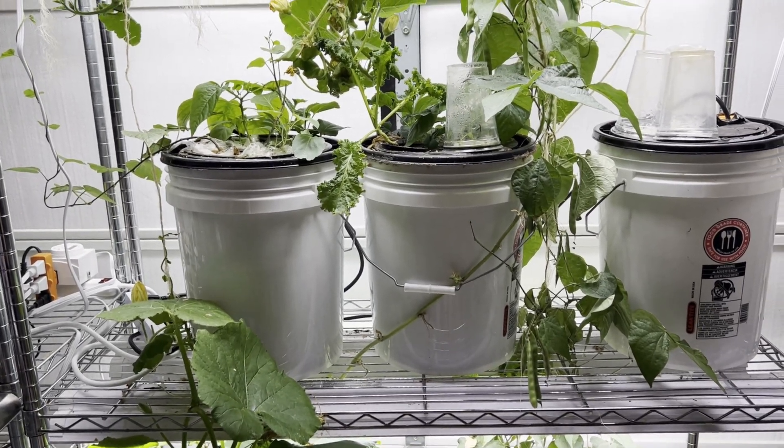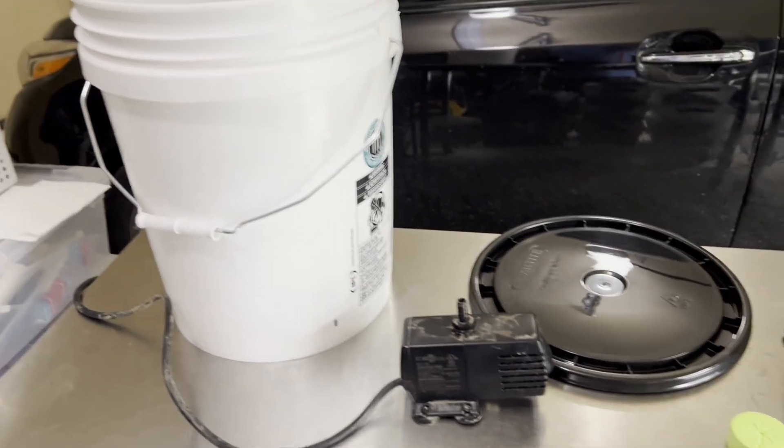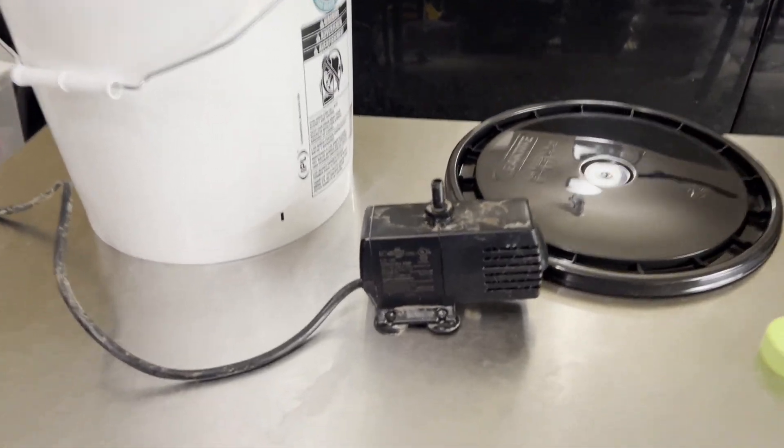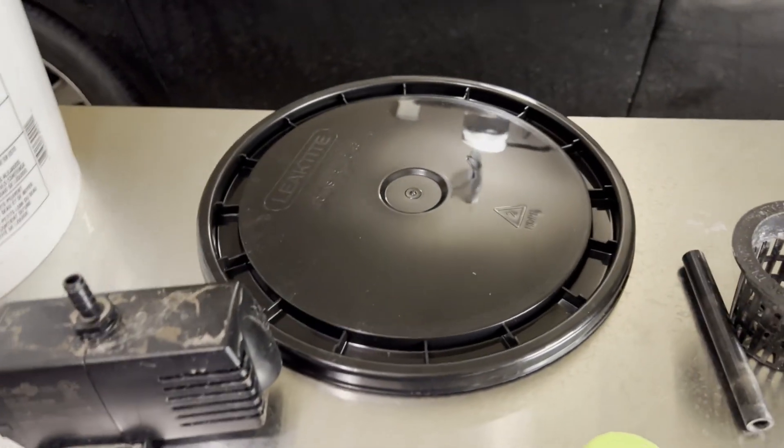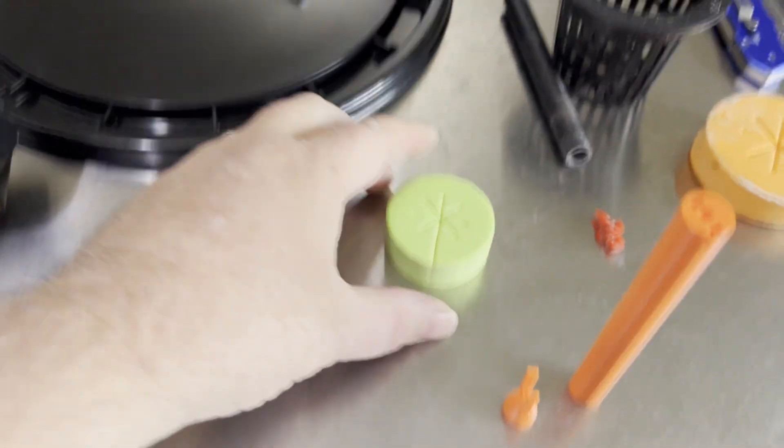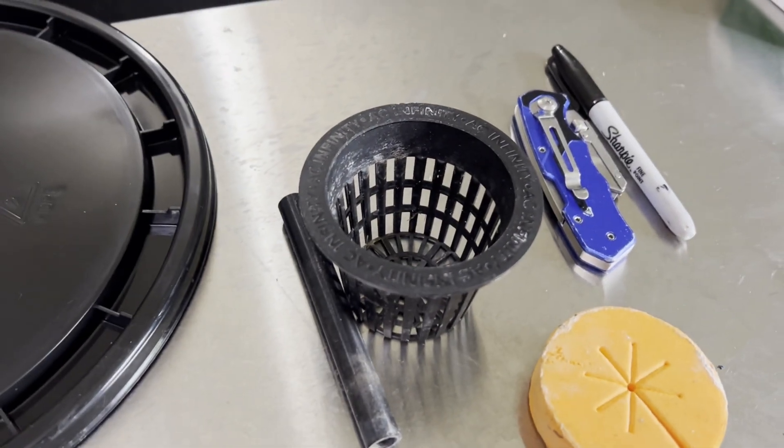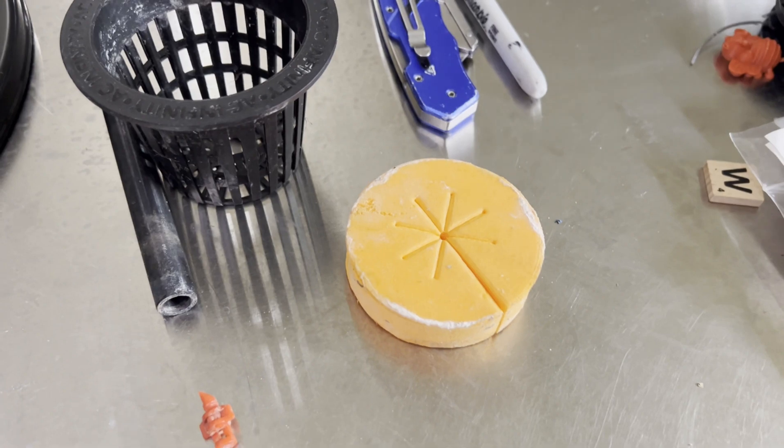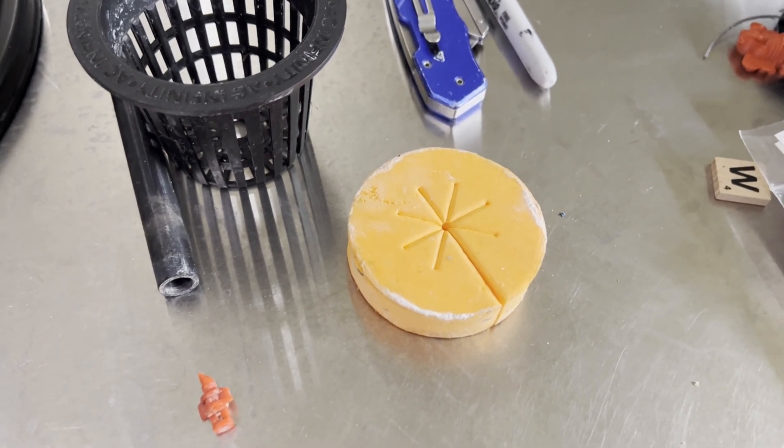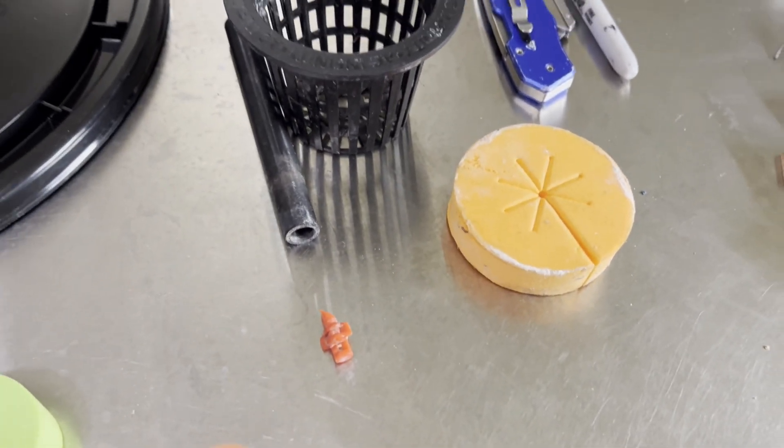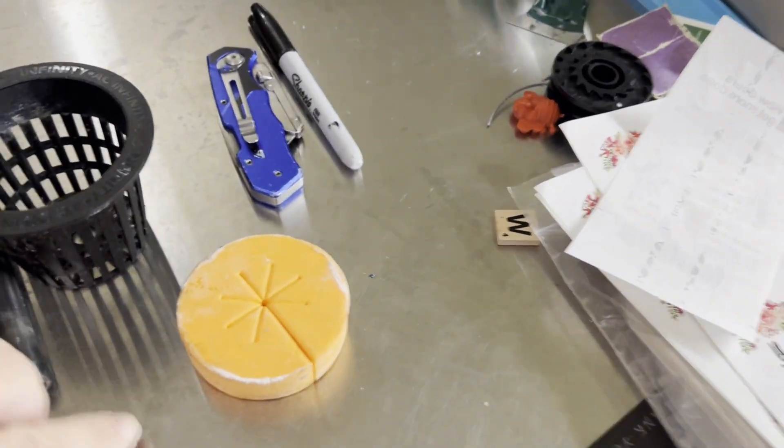So I hope you enjoy it. So the parts you're going to need: of course the bucket, you have a water pump, you have the top, you have this neoprene little thing I think this is two inches. Also I use three inch net pots and then of course three inch stoppers to put those in there.